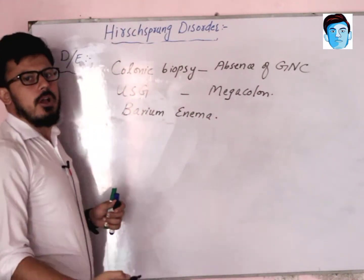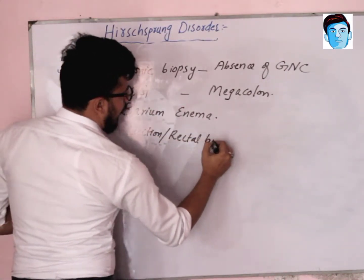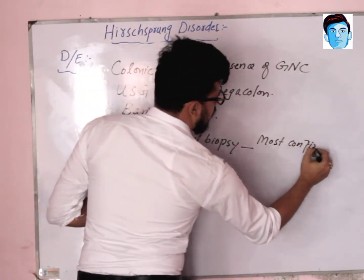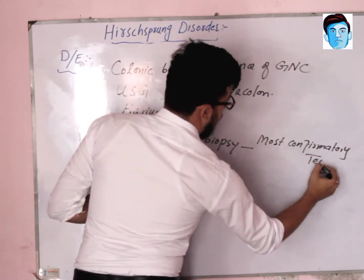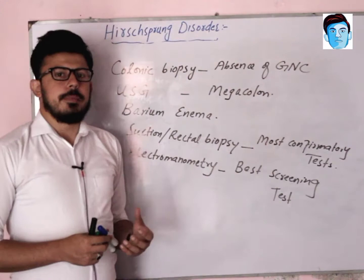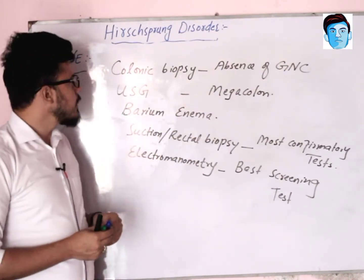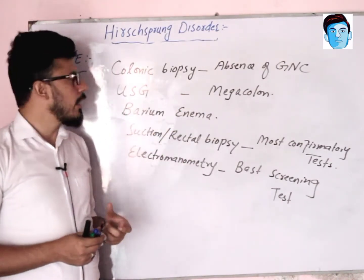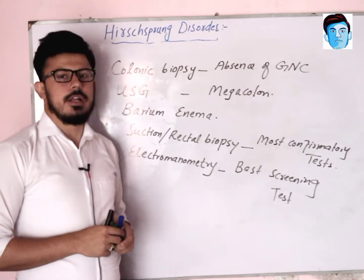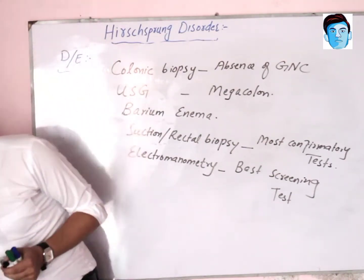Suction biopsy and rectal biopsy are considered the most confirmatory tests. Electromanometry is considered one of the most important and best screening tests for the disease. So in summary, the diagnostic evaluation includes colonic biopsy, ultrasonography, barium enema, suction or rectal biopsy, and electromanometry.